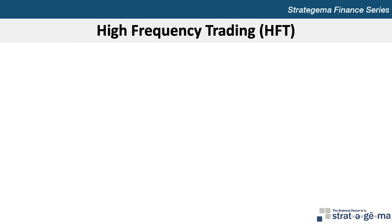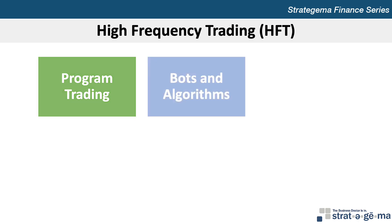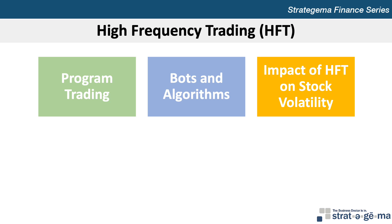High Frequency Trading, or HFT, represents the use of electronic platforms to execute orders based on an algorithm with programmed instructions. One common form of HFT is program trading, broadly defined as a computerized response by institutional investors to either buy or sell a large basket of stocks in response to movements in a particular stock index. High frequency traders use computer systems — commonly referred to as bots — for accessing and interpreting stock market information. HFT may cause share prices to reach a new equilibrium more rapidly and could smooth stock price movements, reducing volatility. However, on May 6, 2010, stock prices declined abruptly in what is now referred to as the flash crash, believed to have been triggered by HFT.